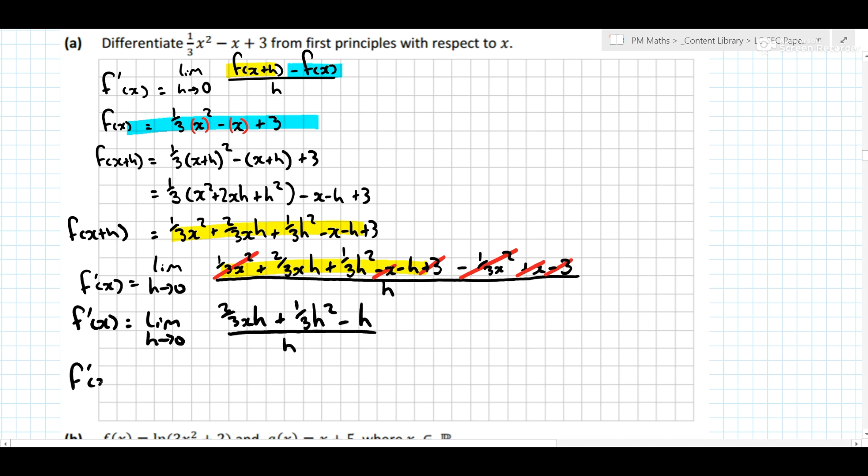h divided by h. On the top line, can we factorise out anything? We can. We can factorise out h. 2 over 3 x plus a third h minus 1, all over h. h divided by h is 1.